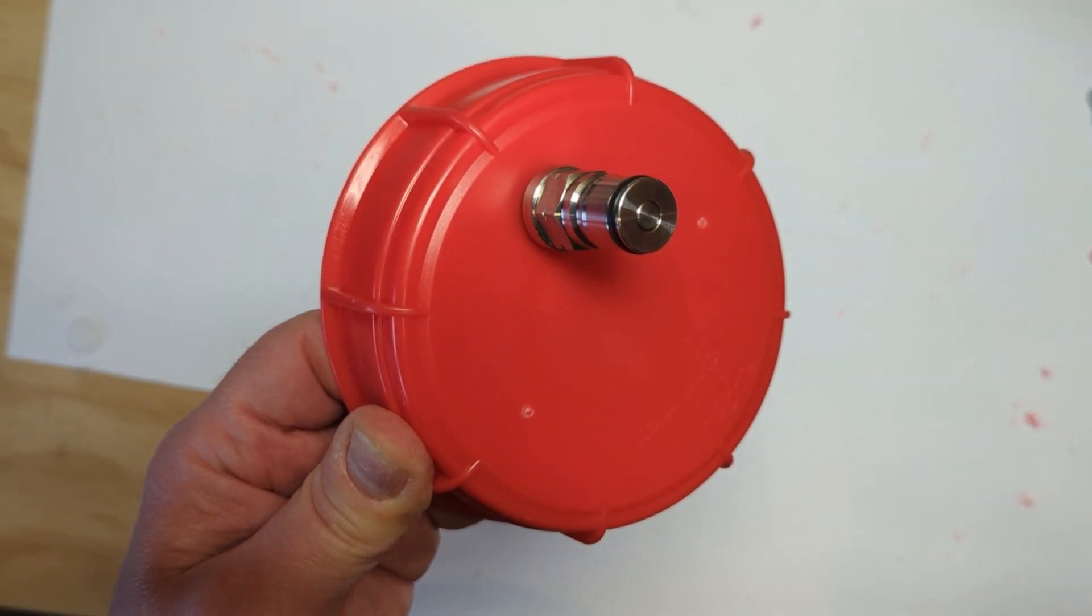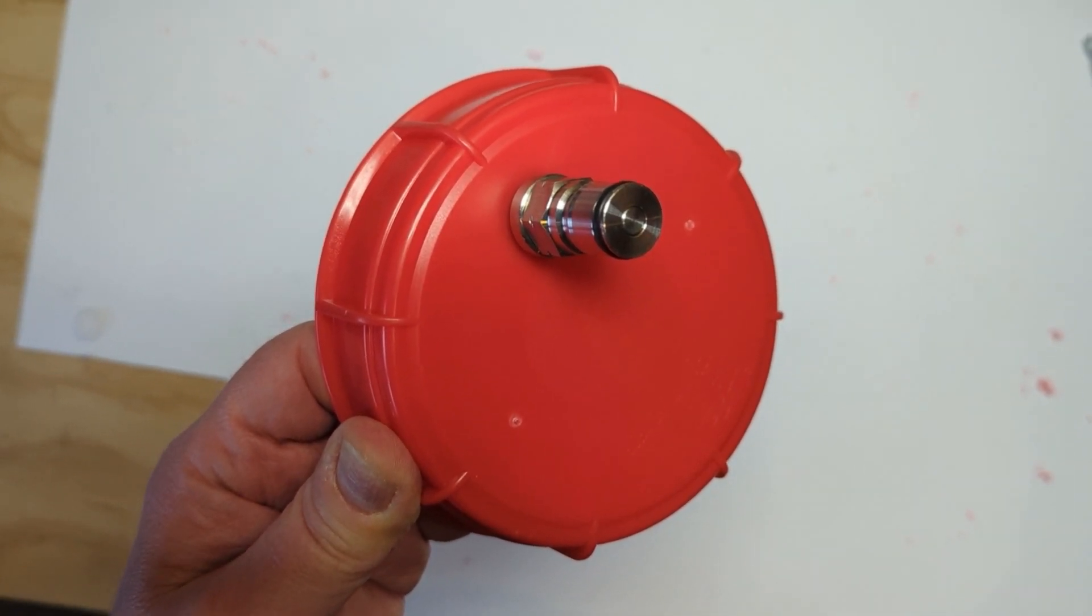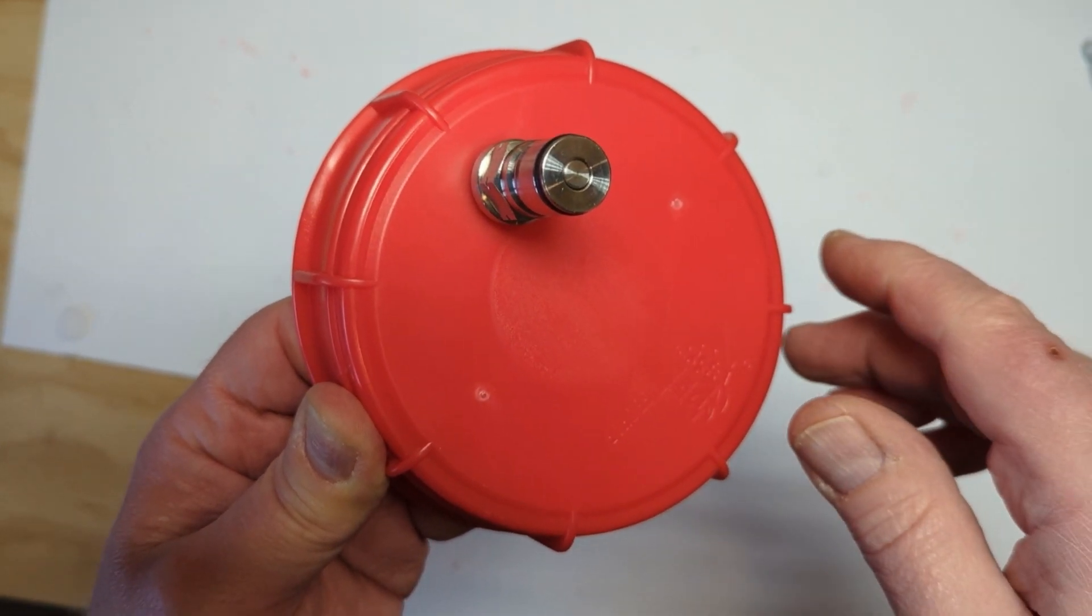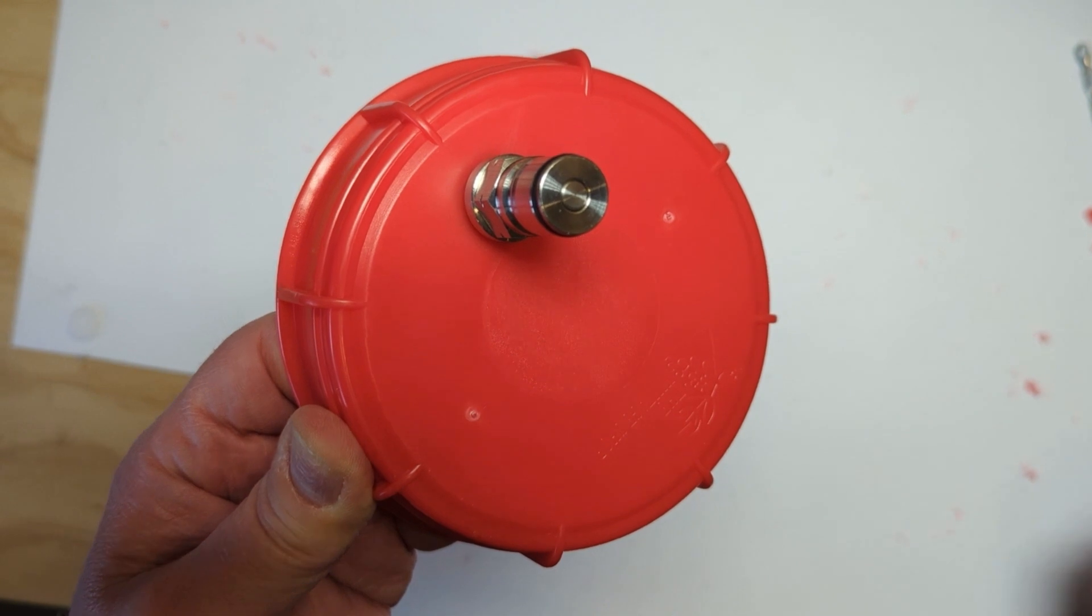My interest here is once you put the yeast in the fermenter, I don't have to touch it. And when I want to transfer it to a keg, I just put a little bit of gas on here. I have the spigot at the bottom, open that up and then I'll do a more complete video when I do it for the first time.